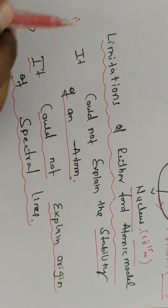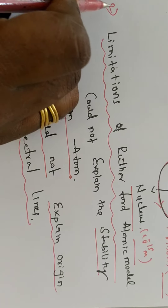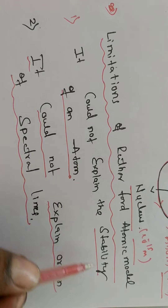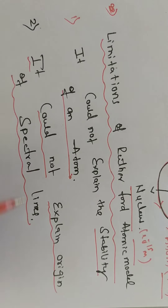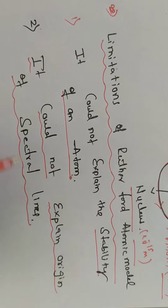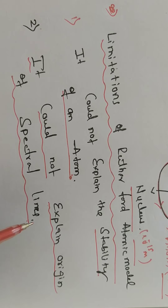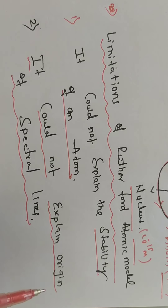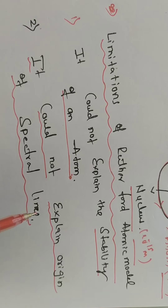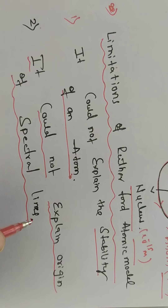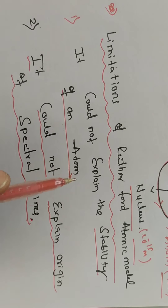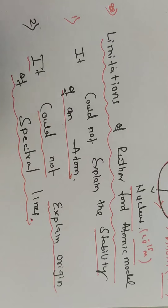Due to these two reasons — first, it could not explain the stability of an atom; and second, it could not explain the origin of spectral lines — the Rutherford atomic model was discarded. Spectral lines refer to the Lyman, Balmer, Paschen, Brackett, and Pfund series: the different series of spectral lines of an atom that this model could not explain.